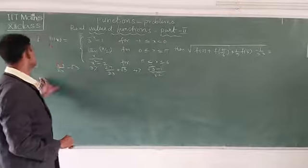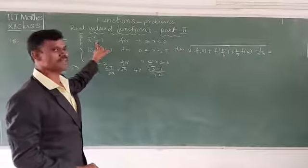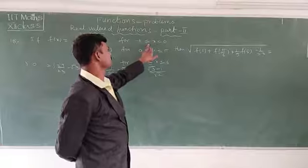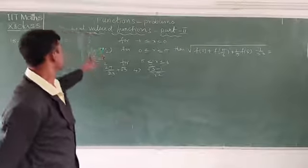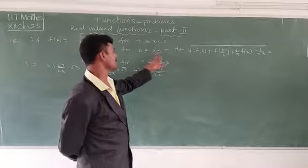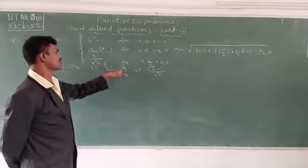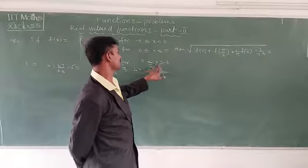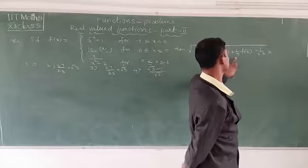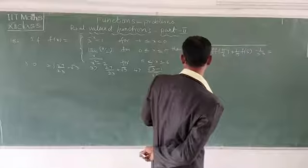Now problem 18 onwards. If f(x) is defined as: 3^(4) of set of 3^4 minus x minus 1 for -1 ≤ x < 0; tan(x/2) for 0 ≤ x ≤ π; and x/(x² - 2) for π ≤ x ≤ 6. Then find the value of √(f(0) + f(π/6) + (1/5)·f(5) - 1/23).